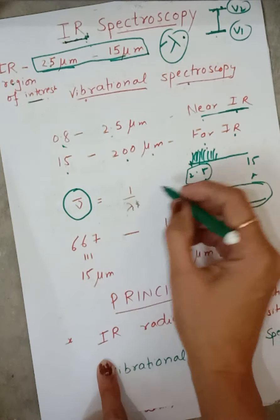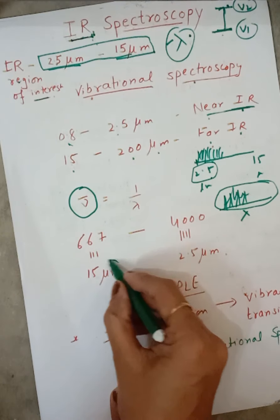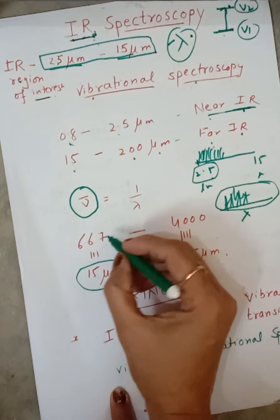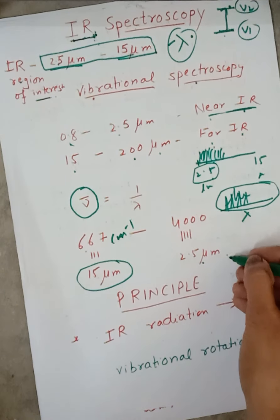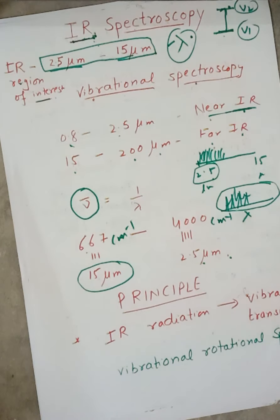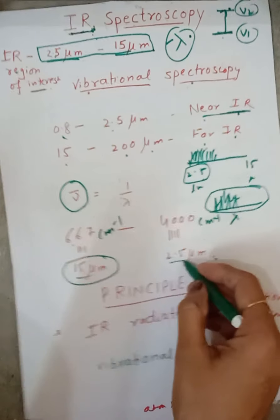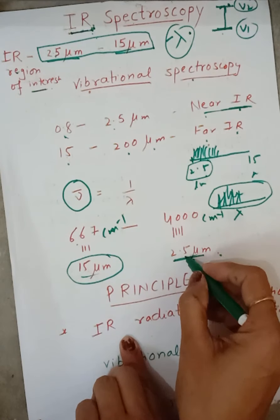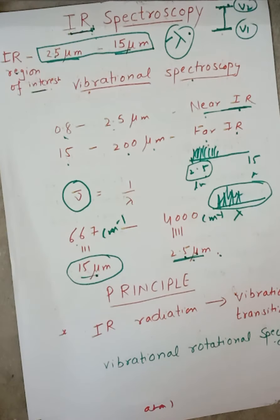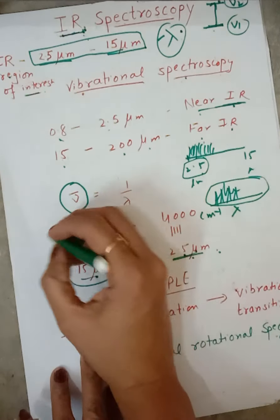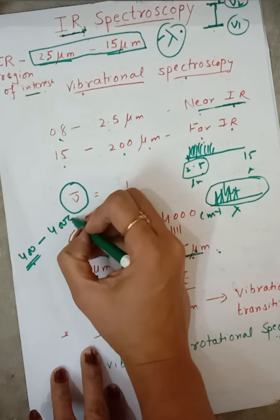We take IR spectrum in terms of wave number. Wave number is basically 1 upon wavelength. So 15 micrometer corresponds to 667 centimeter inverse and 2.5 micrometer corresponds to 4000 centimeter inverse — now the difference has increased. Generally the IR spectrum is taken in the region 400 to 4000 centimeter inverse.